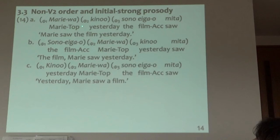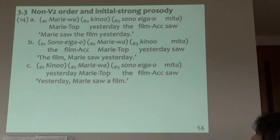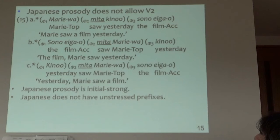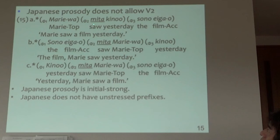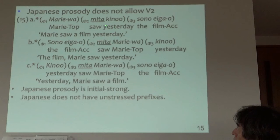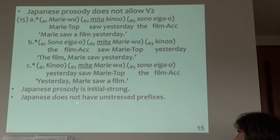In Japanese: 'Marie wa ki no sono eiga o mita.' This is fine because 'mita' is the auxiliary — it's weak and it's at the end. 'Ki no sono' are also strong, so it's okay. Japanese probably does not allow V2 because if the finite verb occurs in the first position of the second phonological phrase — 'Marie wa mita ki no' — this is not good. 'Mita ki no' — not good. Because Japanese has to start with a strong element.